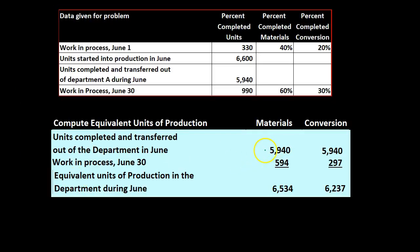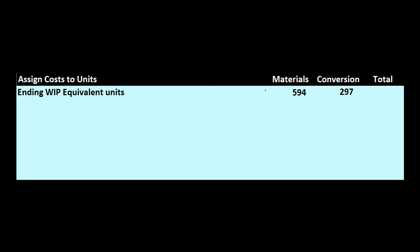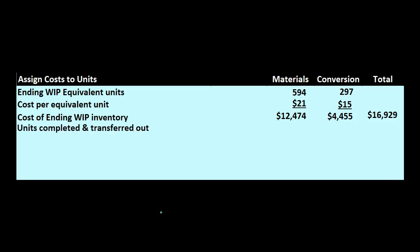Now we'll apply those unit figures. Starting with the ending work in process: 594 equivalent units for materials and 297 for conversion. The cost per equivalent unit was $21 and $15. Multiplying those gives us $12,474 and $4,455, which adds up to a total ending work in process of $16,929.